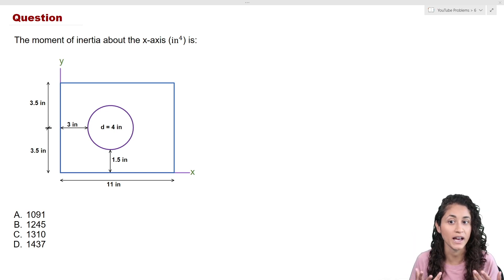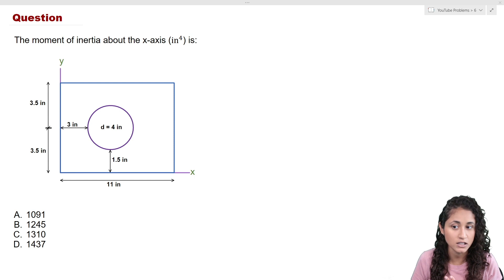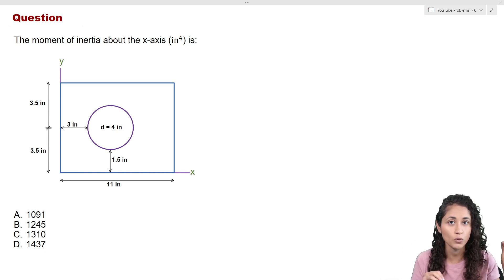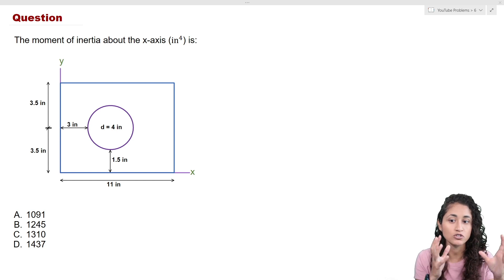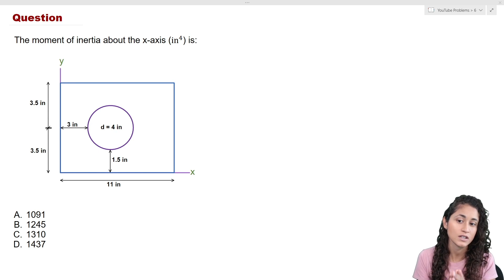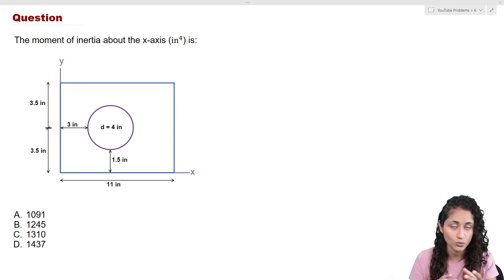This is the shape we have and we want to find the moment of inertia about the x-axis. We have already solved the centroid for this problem — I'll leave the link above if you want to check it out. For the rectangle, that's going to be easy because it's already on the x-coordinate system, so we can just grab the equation from the reference manual and plug in. For the circle, we can't do that because the circle is not right on the x-axis — it's 1.5 inches above it — so we need to use the parallel axis theorem. Also, because the circle is inside the rectangle, make sure you subtract when applying the moment of inertia equation.